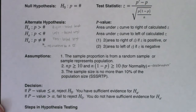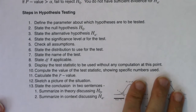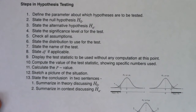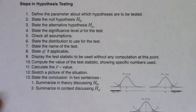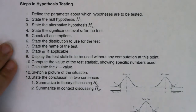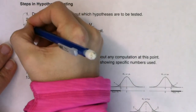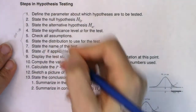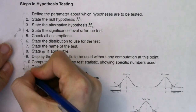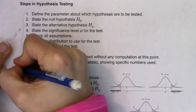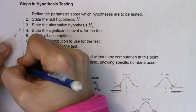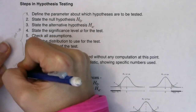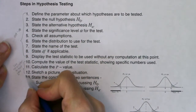Let's take a look at what 13 steps in a hypothesis test look like. On your midterm and free response questions, yes, you will have to do these, and I will need to see all 13 steps. The first nine are setup. The next three — steps 10, 11, and 12 — you're going to use your calculator to help you. And the last one is your conclusion.